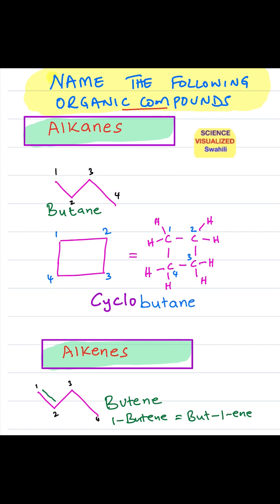The first functional group we look at is alkanes, and alkanes ends with A-N-E. An example is this alkane that has 1, 2, 3, and 4 carbons, and because it has 4 carbons, the name is butane. See the ending, A-N-E, butane.